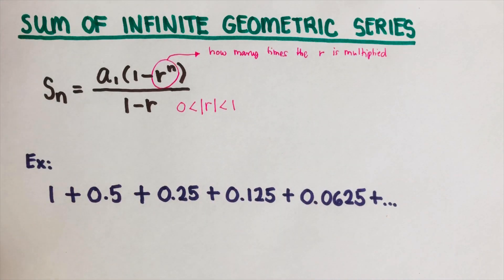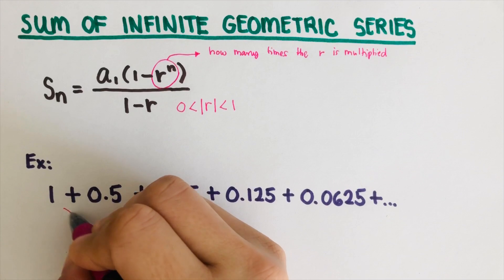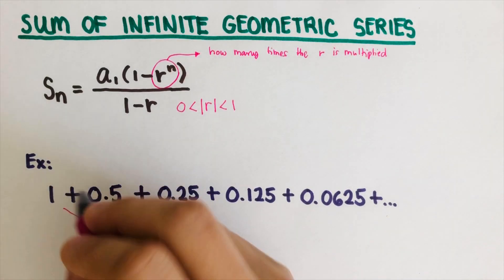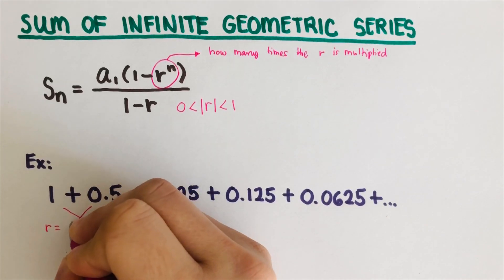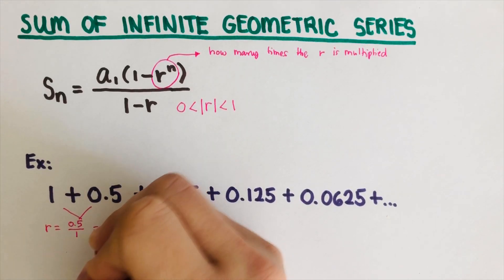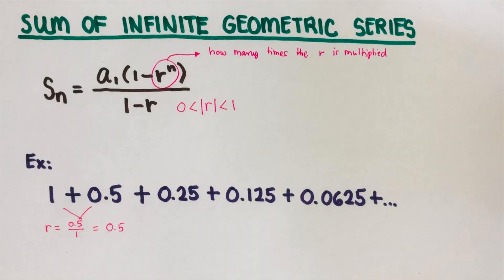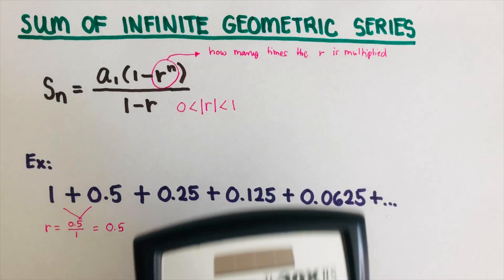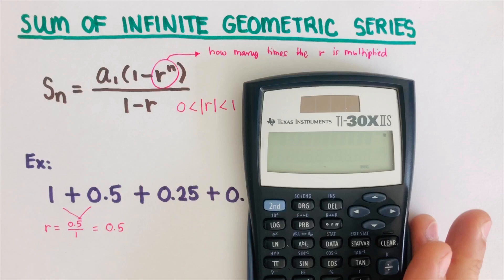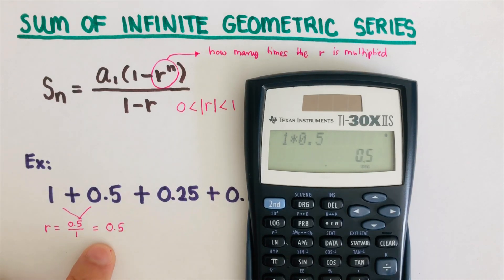Let's look at this example to better understand. To find r, we divide the second term by the first term. So r here is 0.5 divided by 1, which gives r = 0.5. Now I will set this up on the calculator — it's going to go to infinity.